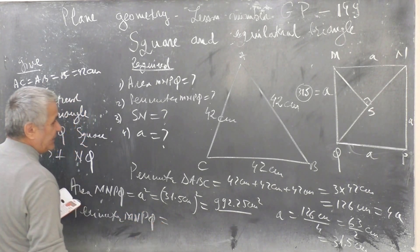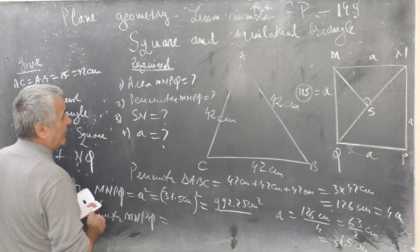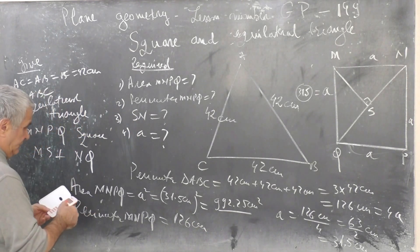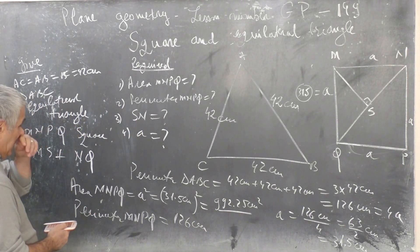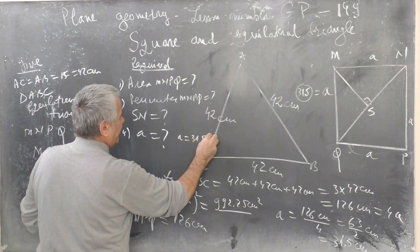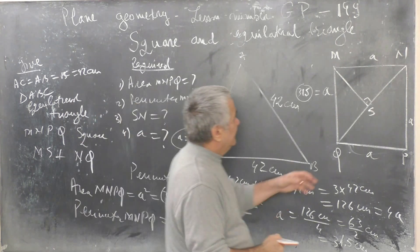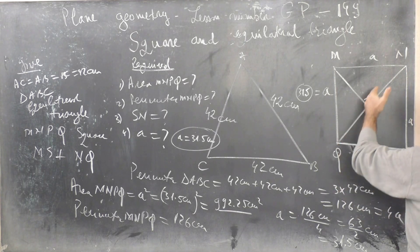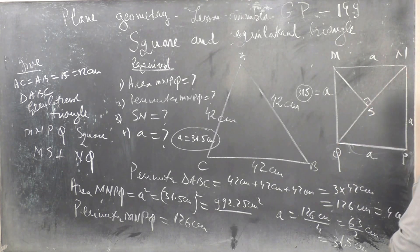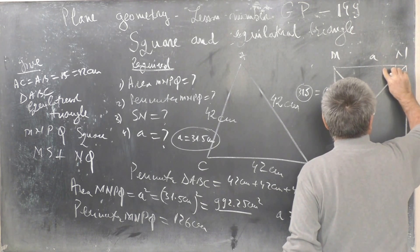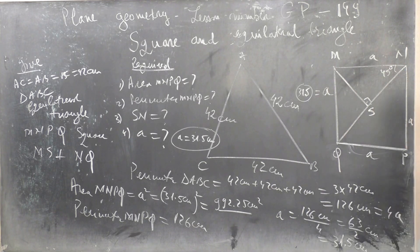Perimeter of MNPQ equals perimeter of triangle, equilateral triangle equals 126 cm. A equals 31.5 cm. Projection of side for diagonal NQ equals NS.